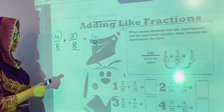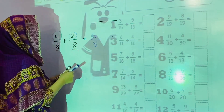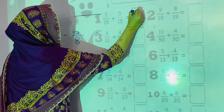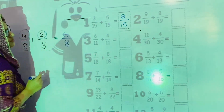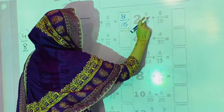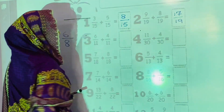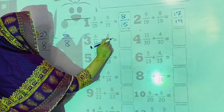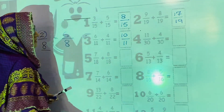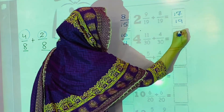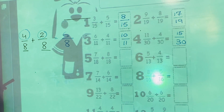Let's move on to the first question. The first one: 3 plus 5 is 8, and the denominator is written as it is because these are like fractions. In the second one: 8 plus 9 is 17, and the denominator 19 stays as it is. In the third one: 6 plus 4 is 10, and the denominator is written as it is. Then 11 plus 4 is 15, and the denominator will be 30. In this way you will complete this activity.